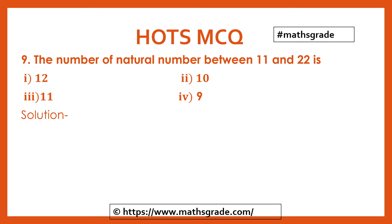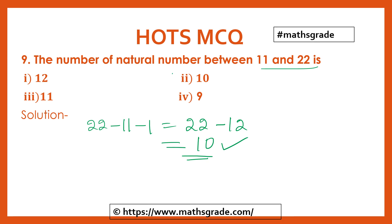If you want to learn more HOTS MCQ questions then please leave a comment below. Now question number 9: The number of natural numbers between 11 and 22 is — 12, 10, 11, or 9? Natural numbers between 11 and 22: that is B minus A minus 1, which is 22 minus 11 minus 1 = 10. So the answer is 10, option 2 is correct.